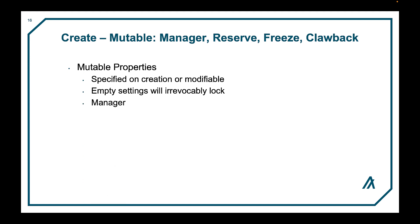The manager address is the primary account that manages all other mutable addresses. The manager address can change or lock any of the mutable addresses. Locking any of the addresses effectively turns off that capability for the life of the ASA. The reserve address can be used as a store for non-minted tokens. A freeze address can be used to freeze or unfreeze an ASA for a specific account. Accounts that have been frozen are not allowed to send or receive the frozen ASA. The clawback address can be used to revoke an ASA from a specific account, and the revoked ASA can, as part of the clawback function, be sent to any other account that has opted into the ASA.